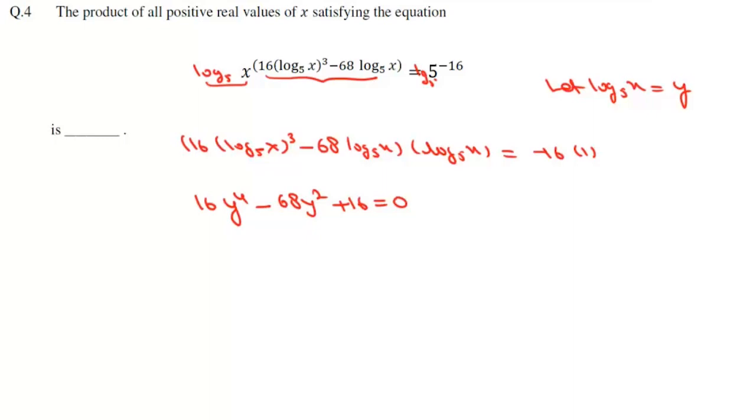If we divide everything with 4, we can write this as 4y to the power 4 minus 17y square plus 4 equals 0, which is 4y to the power 4 minus 16y square minus y square plus 4 equals 0. So here it will be 4y square minus 1 into y square minus 4 equals 0.